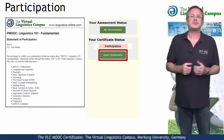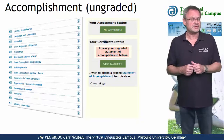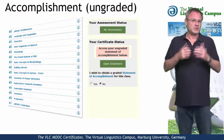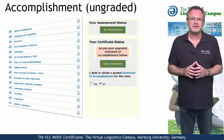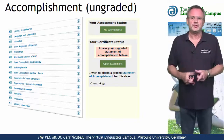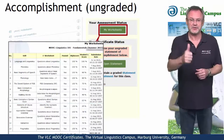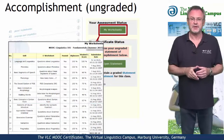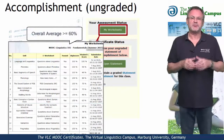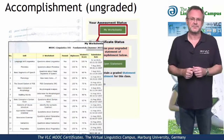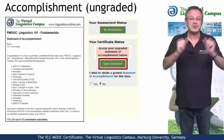The second option is the Statement of Accomplishment, also for free and issued by the Virtual Linguistics Campus. To be given such a certificate, we not only want your regular participation, but we also want you to do the Mastery Worksheets — our electronic tests, one for each unit — and we want you to achieve an overall score of at least 60%. A simple click on the Open Statement button and the certificate is yours.